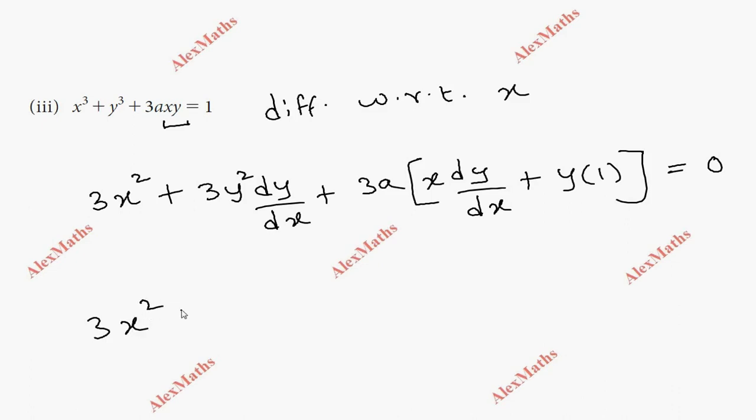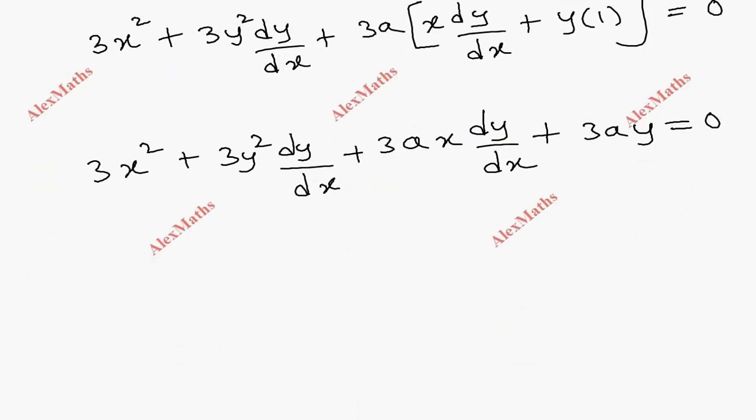First term as it is. 3a implies 3a is common. 3ax dy/dx plus 3ay equal to 0. We're going to do the grouping now.